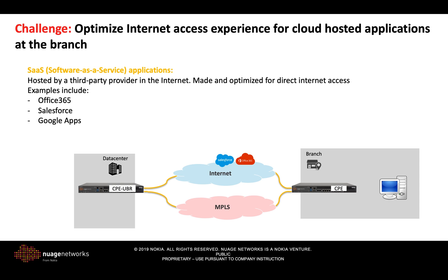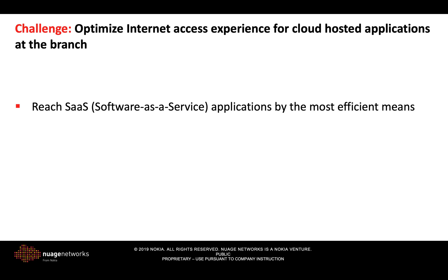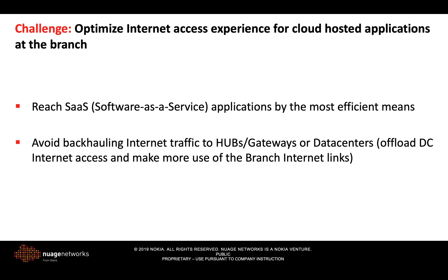However, the traditional way of accessing internet resources in large distributed networks is through the main data center location, where the traffic can be firewalled or proxied. This can have a big impact on performance. Therefore, we must ensure we can reach SaaS applications by the most efficient means — we need to avoid backhauling traffic and use the local internet access instead. This also allows applying security closer to the source and avoids unnecessary traffic tromboning.